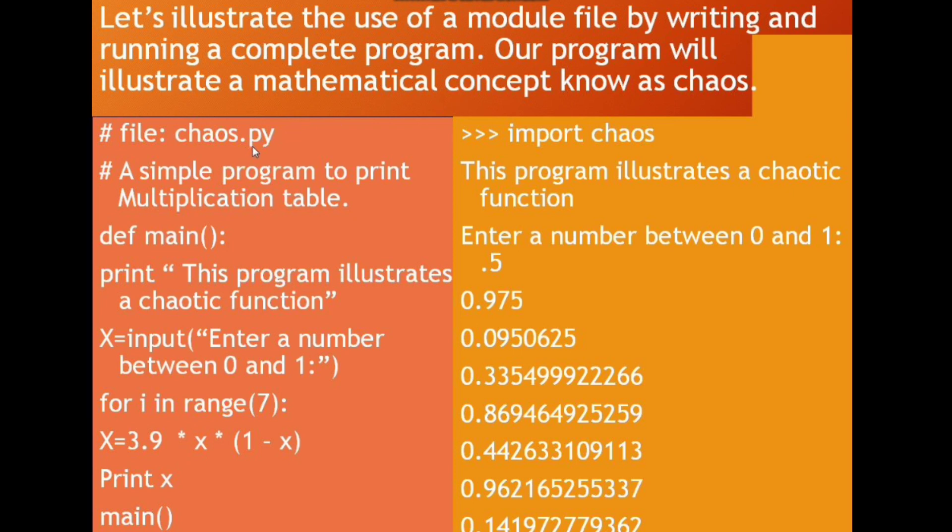The hash symbol is used to put comments. The def keyword makes the definition of main. You can see that this particular example contains lines to define a new function called main. print is the keyword to print on screen. x equals input with parentheses is the input statement.